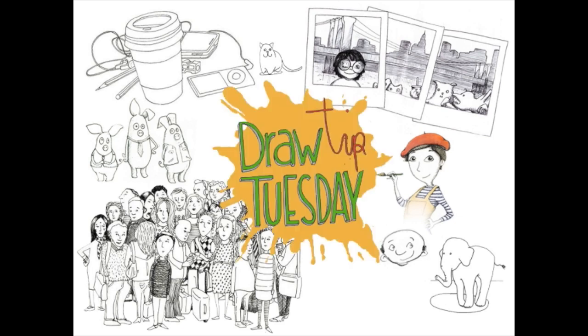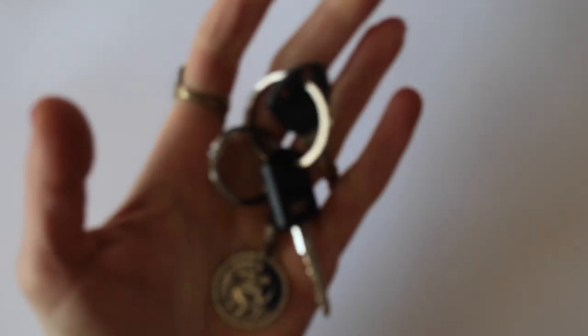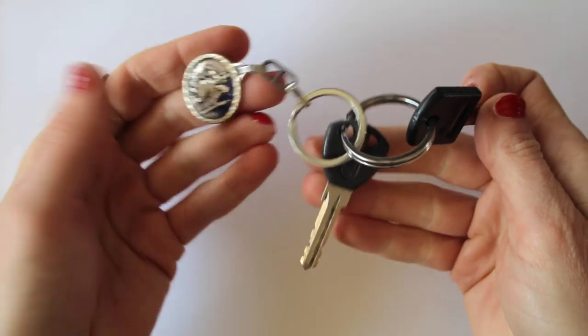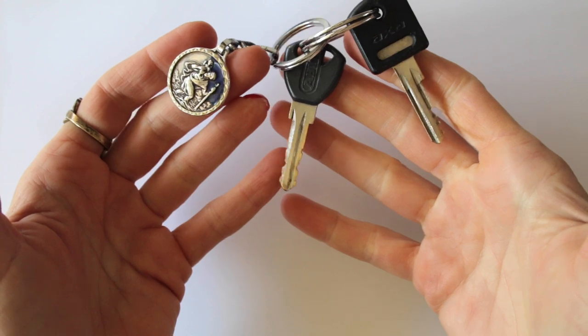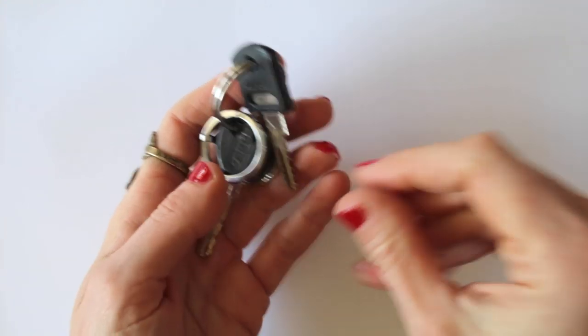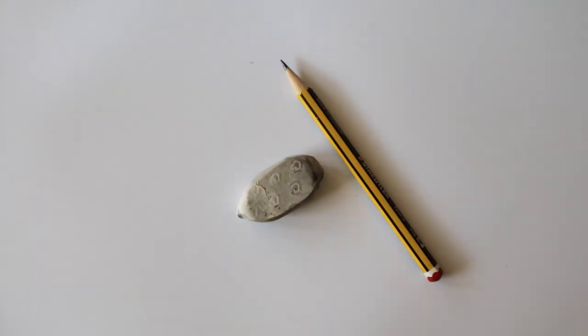Welcome to Draw Tip Tuesday! Today I am drawing an item that I use daily, the keys to my bicycle. I'll be drawing on sketch paper using a pencil and an eraser. I put the keys in front of me and look at them.